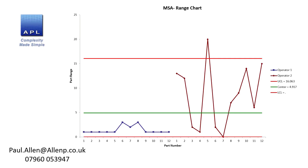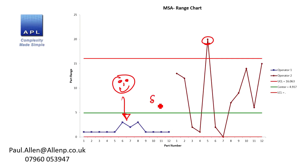Does it need improving? Yes it does. Operator one clearly has a method - he knows what he's doing with this new piece of equipment and he's repeatable to within a few numbers. Operator two, being 20 out in this case, clearly is just not up to the task. If we can get a standard operating procedure from operator one and train it to operator two, that is the minimum you would do. But actually this measurement system is perfectly okay for the practical job you're asking it to do.